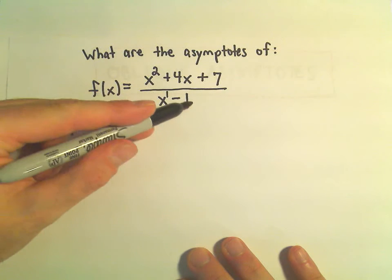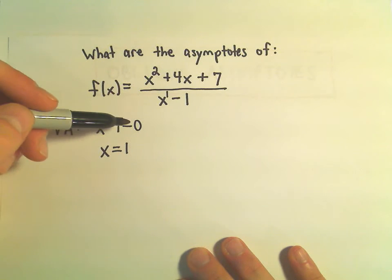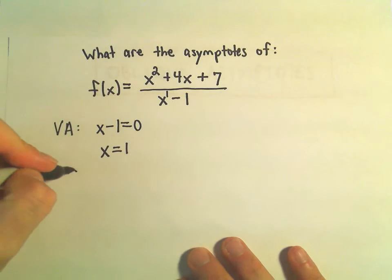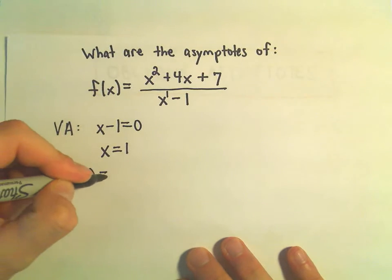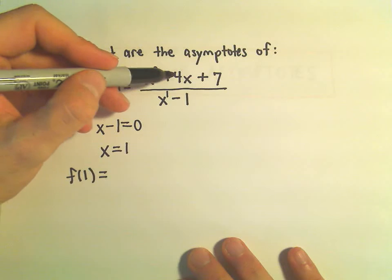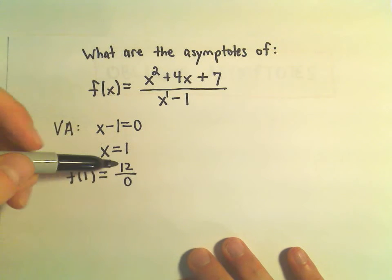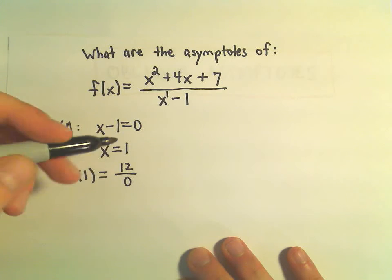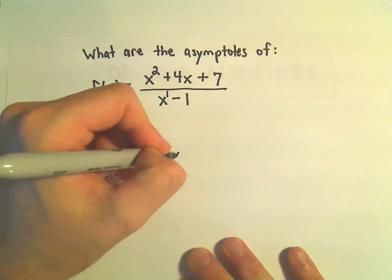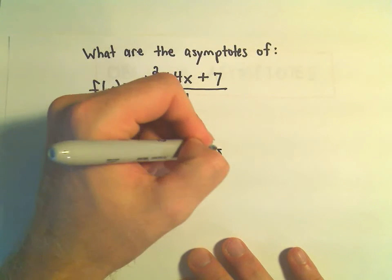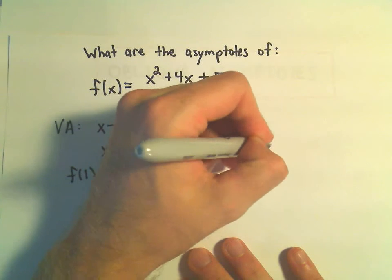And I know that if you plug one in, you get zero on the bottom. I also have to make sure that if you plug one in, we don't get zero on the top. And notice if you plug one in, we would get one plus four, which is five, plus seven, which is twelve, over zero. We have something non-zero over zero. That tells me that x equals one, in this case, is a vertical asymptote.